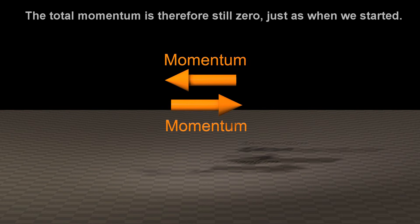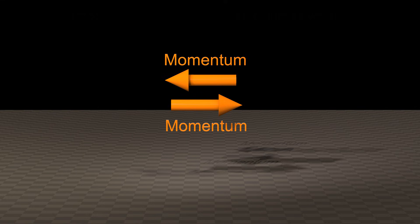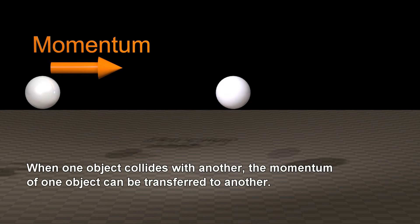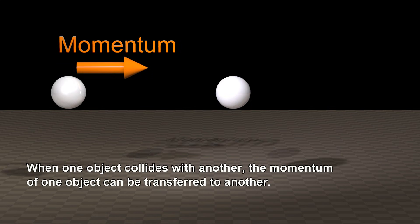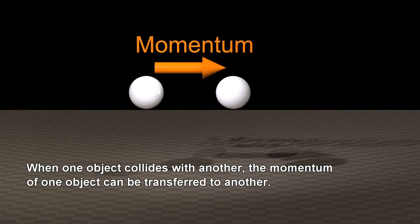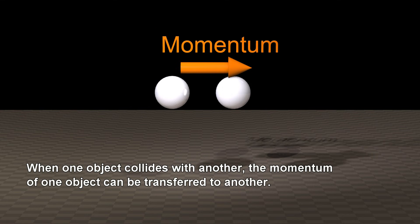The total momentum is therefore still zero, just as when we started. When one object collides with another, the momentum of one object can be transferred to another.